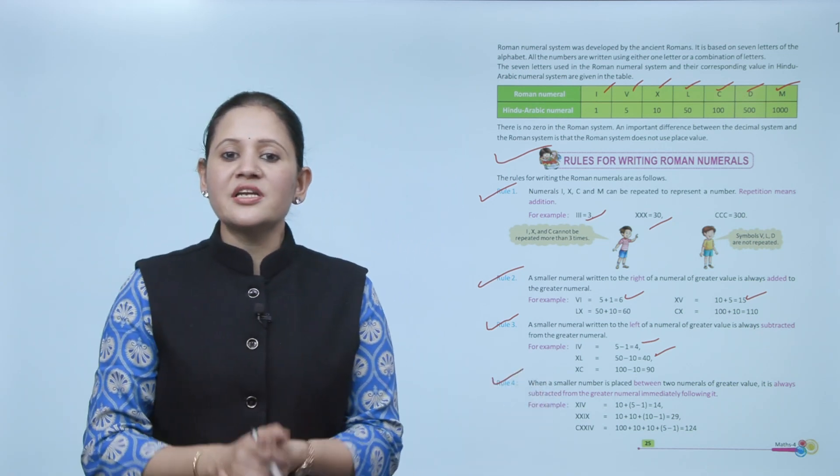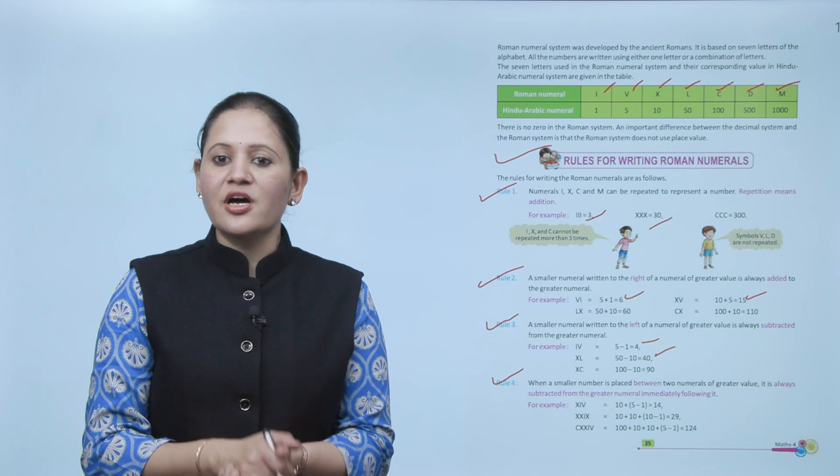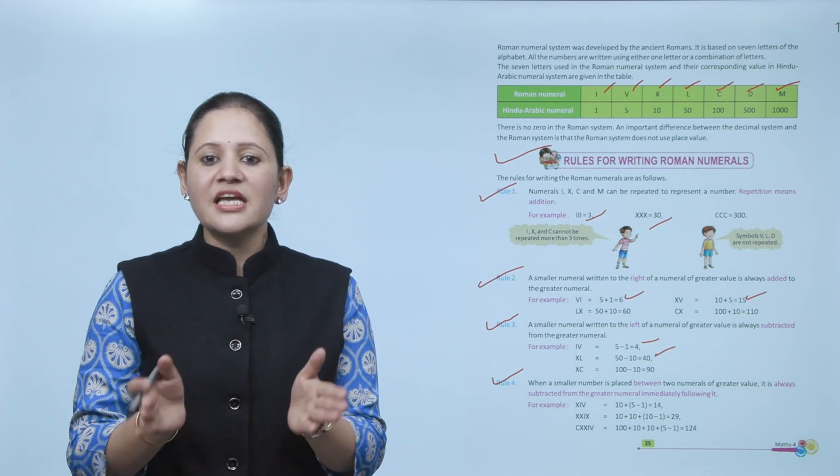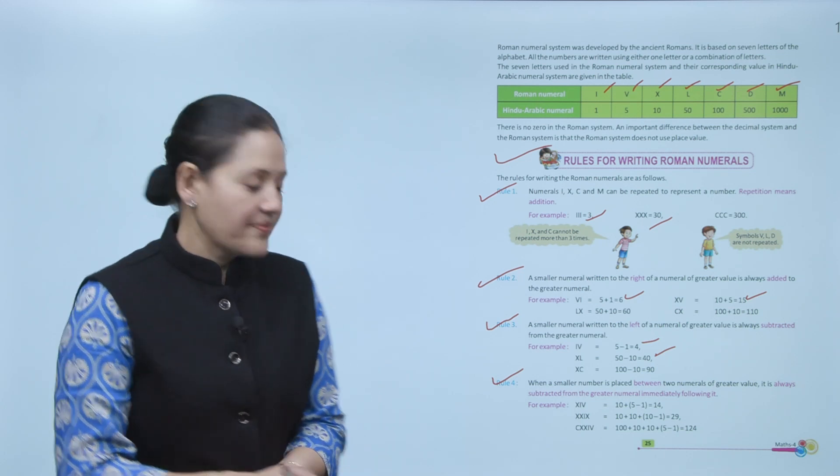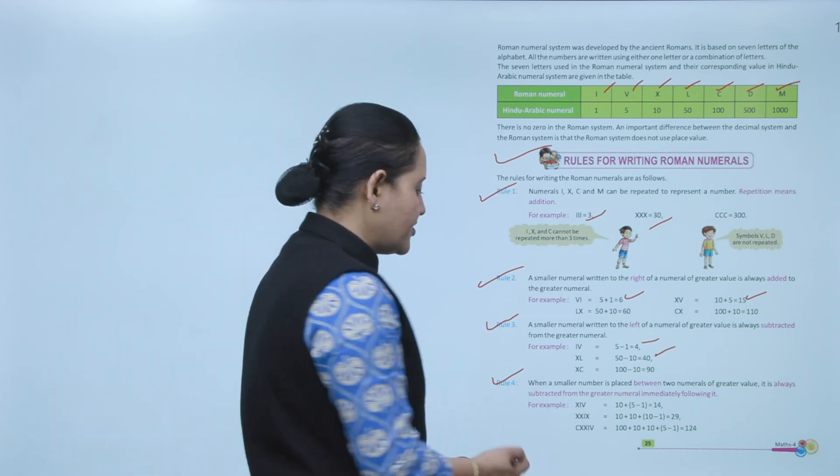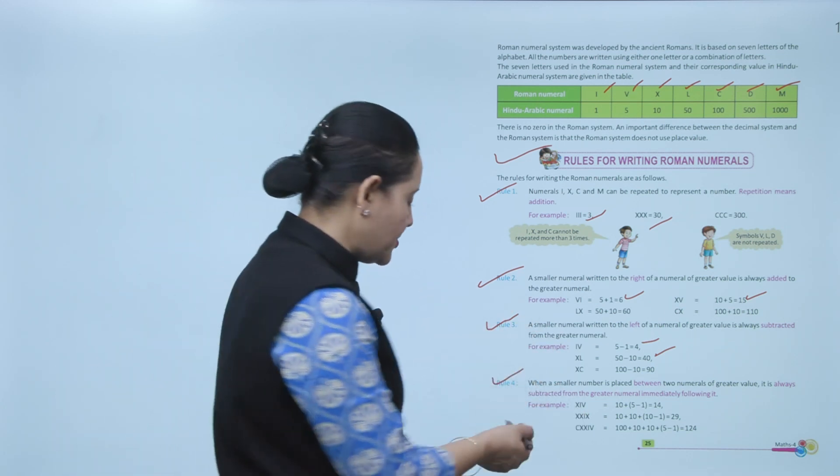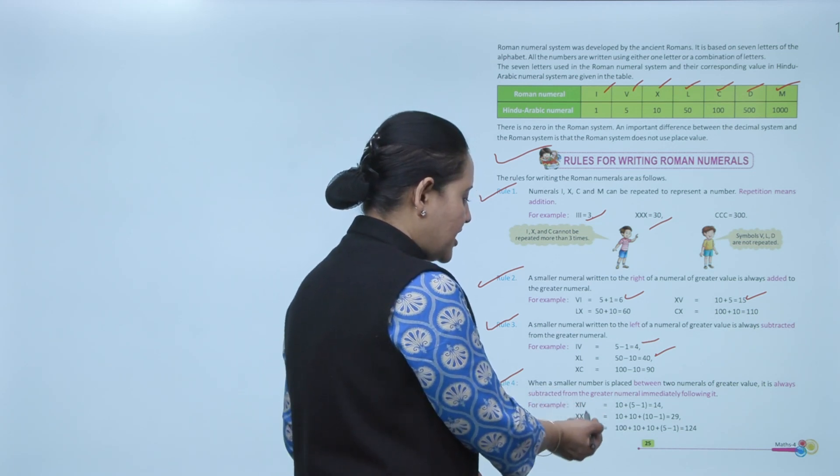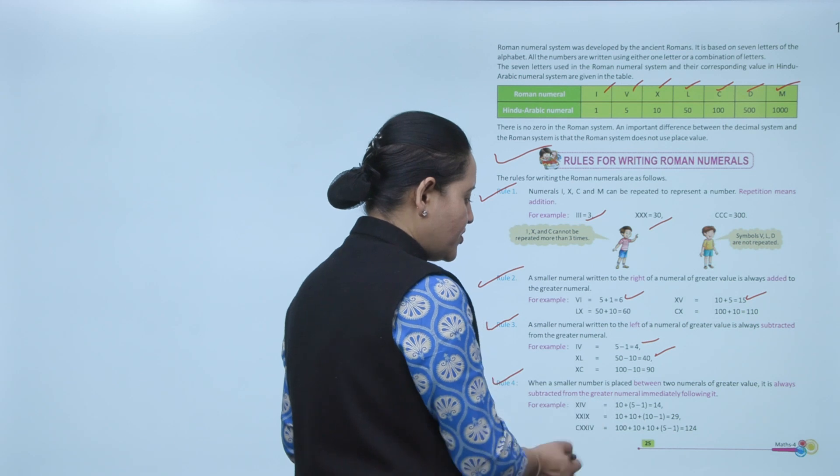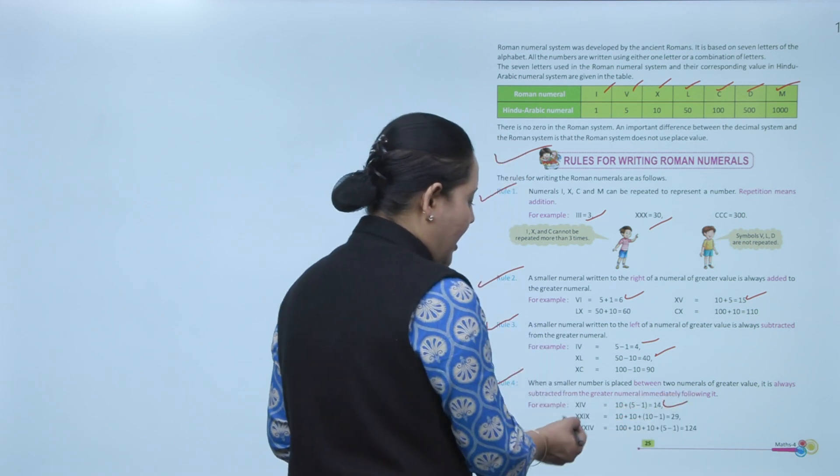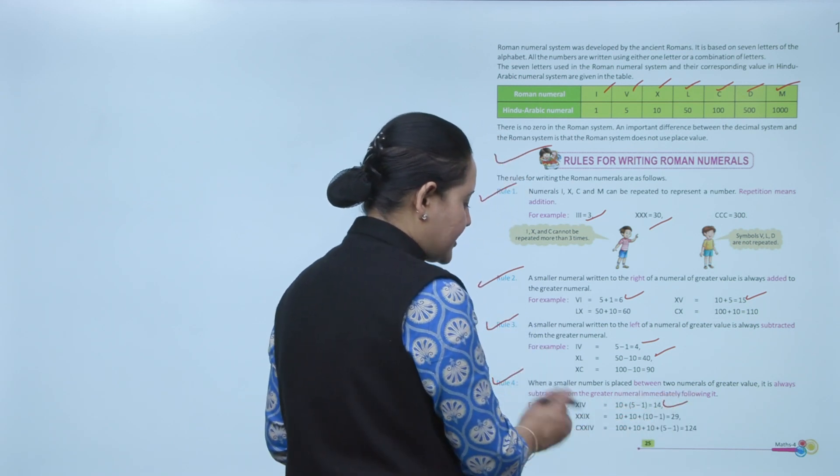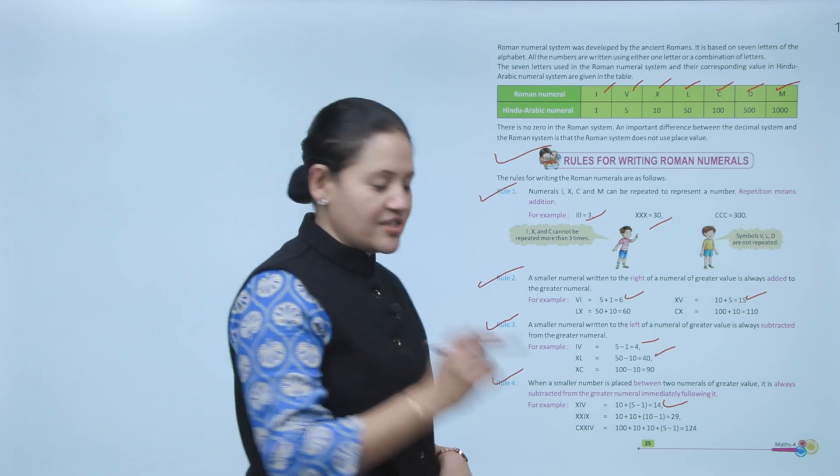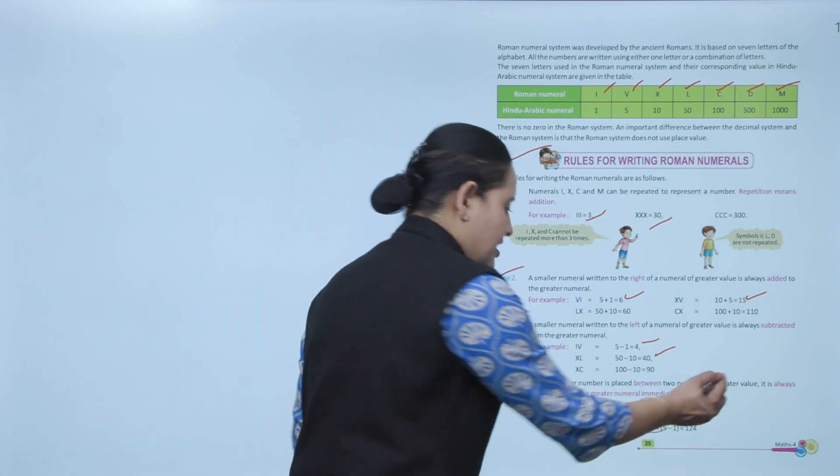Next, rule number four: When the smaller number is placed between two numerals of greater value, it is always subtracted from the greater numeral immediately following it. For example, XIV, so smaller is between two greater numerals, so kya hoga? X means 10 and IV kya hoga? 5 - 1, that is 4. So value aegi 14. XXIX, XX means 10 + 10, that is 20, IX means 9, so 29. Clear?